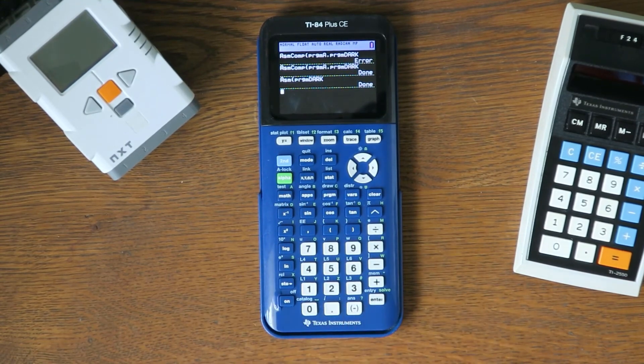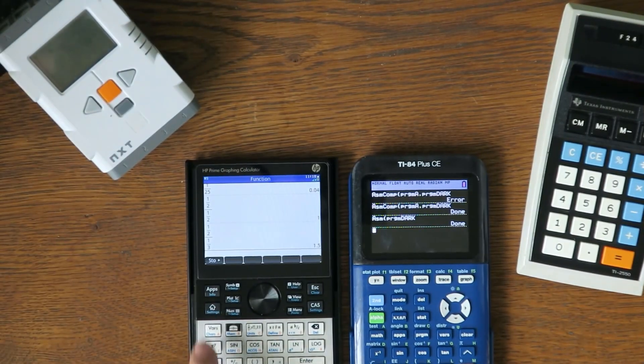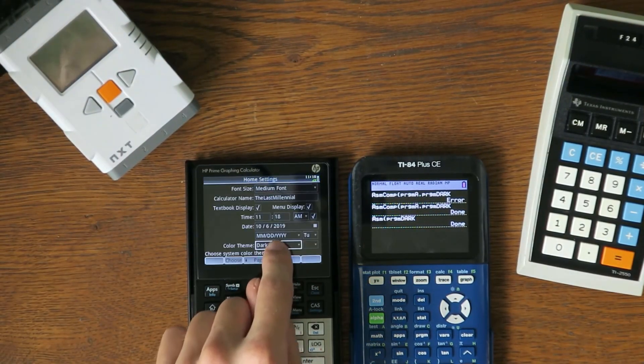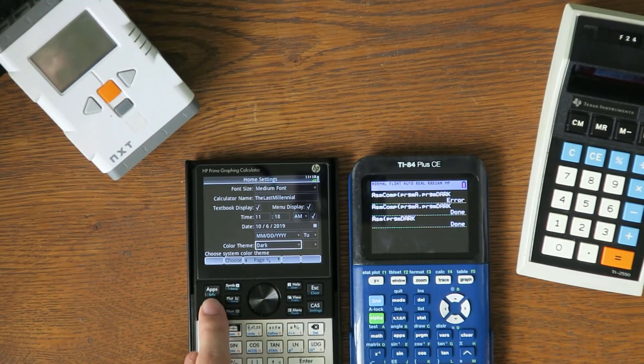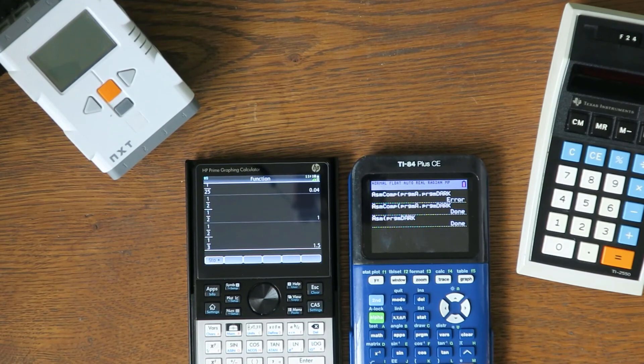And that's all! You have successfully inverted the colors to achieve Dark Mode. Since TI doesn't have an official Dark Mode, unlike other calculators, this trick will last until you turn off your calculator. When you turn it back on, you'll need to rerun the program to start Dark Mode again.